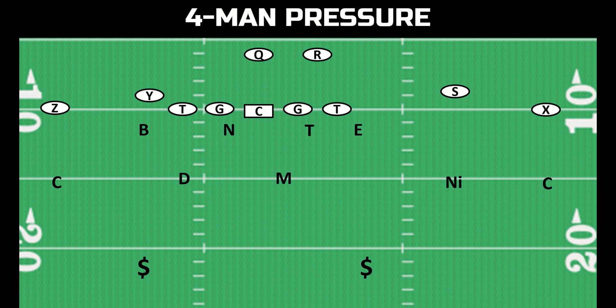Then the most basic, most common category of pressure is simply a four-man pressure. Nobody is blitzing. The only four players rushing the quarterback on a pass are the four down defensive linemen, and all other seven defenders are dropping in coverage.